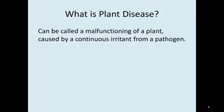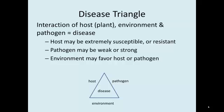What is a plant disease? Similar to humans, it can be called a malfunctioning of a plant caused by a continuous irritation from a pathogen. Disease is looked at as a disease triangle in plants — a combination of the host, which is the plant, the environment, and the pathogen. And over time, these interact.